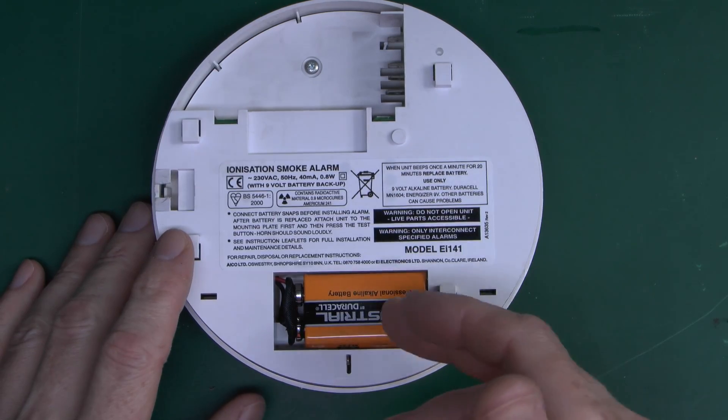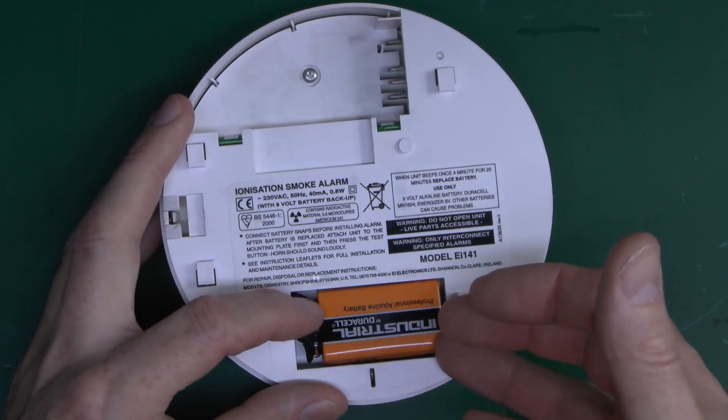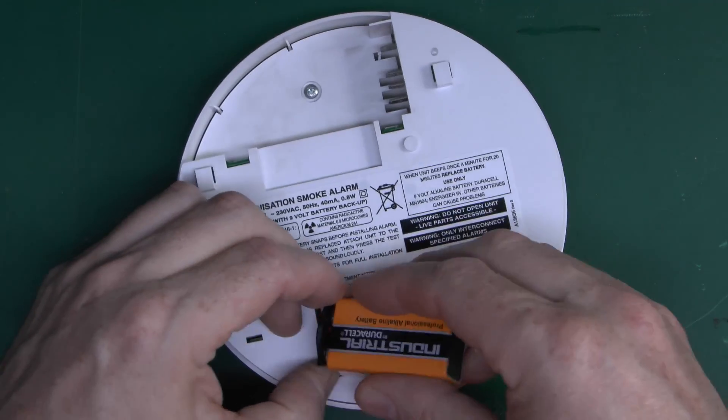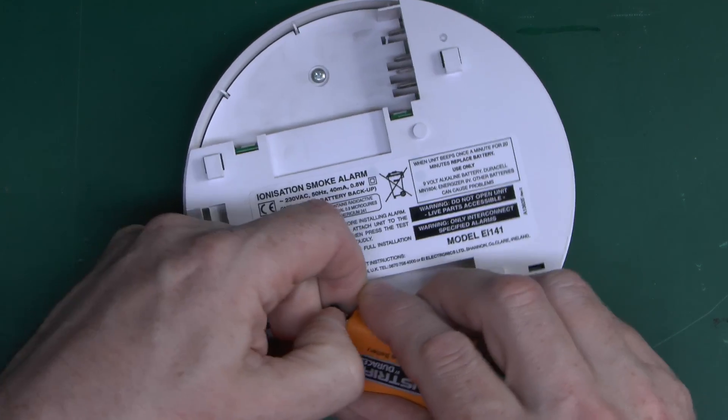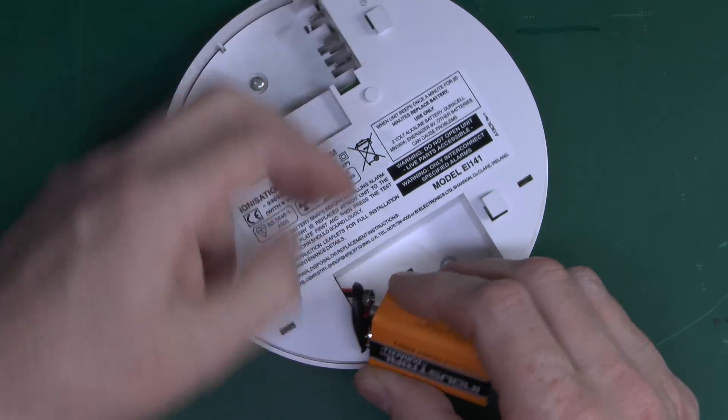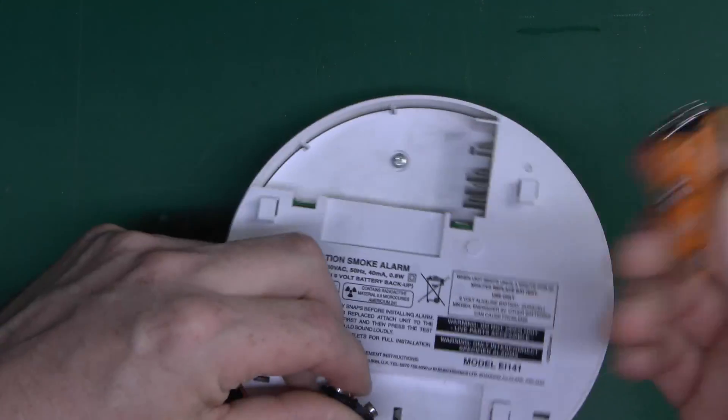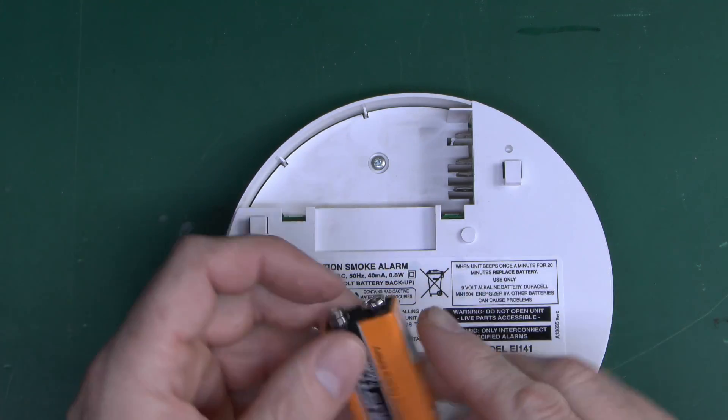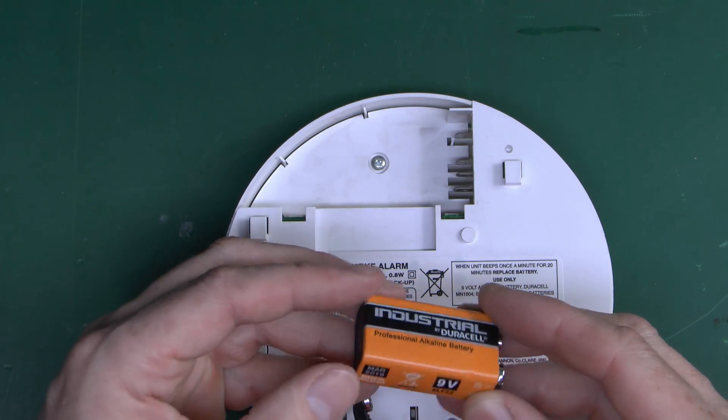Now this is the alarm itself, and this is one with the 9V battery backup in here, and we'll just take the battery out of there. This battery is not actually connected until it's clipped onto the plate, so you can't just leave the battery in there forever, just standard 9V alkaline battery there.